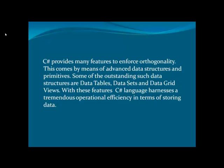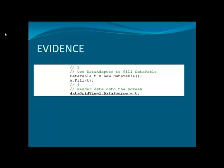Let's talk about orthogonality. C-Sharp provides many features to enforce orthogonality, including advanced data structures such as data tables, data sets, and data grid views. With these features, C-Sharp harnesses tremendous operational efficiency in terms of storing data. In the evidence slot for orthogonality, we can see how a data table is declared, and once the content of the data table is assigned as the data source for the data grid view, we can see the contents using that particular view.